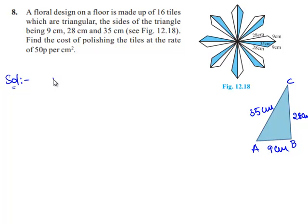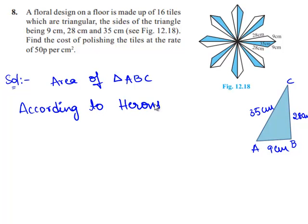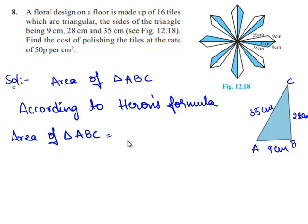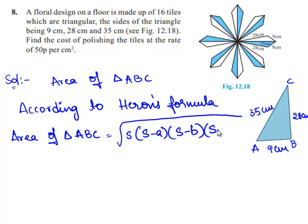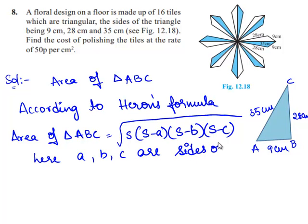Now we shall find the area of triangle ABC according to Heron's formula. The area of triangle ABC is equal to the square root of S times (S minus A) times (S minus B) times (S minus C), where A, B, C are the sides of the triangle, and S is the semi-perimeter, calculated as (A plus B plus C) divided by 2.